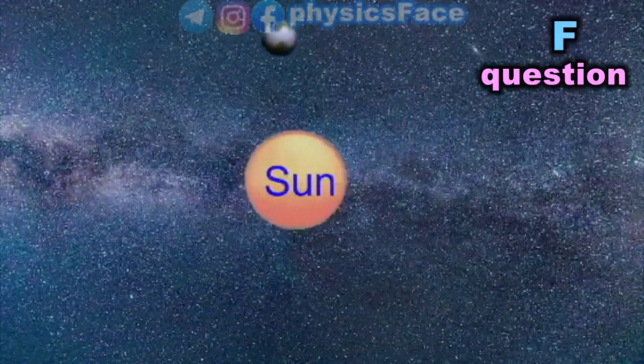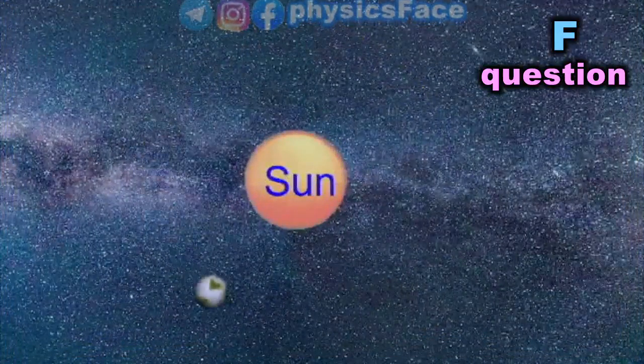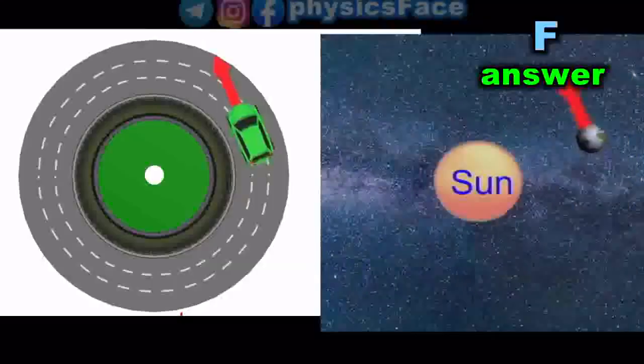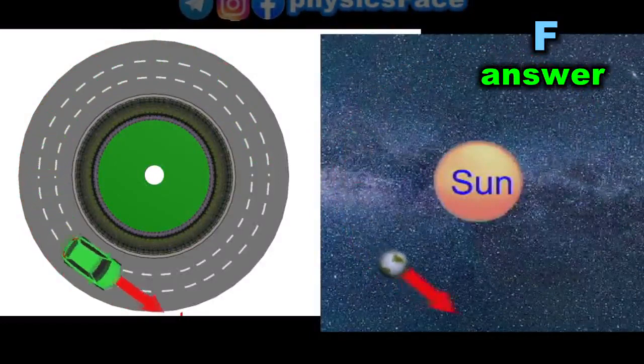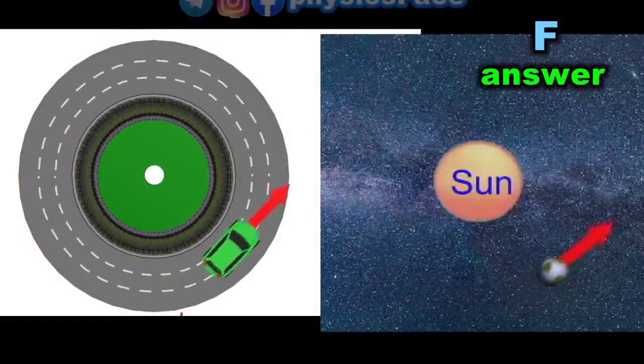F, the motion of the earth around the sun. Answer to F, this motion is accelerated, and is actually similar to the motion of a car in a square.